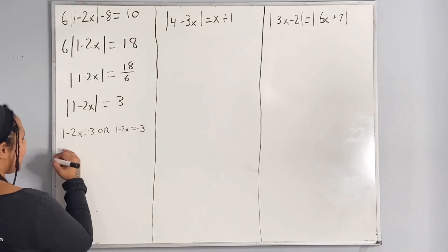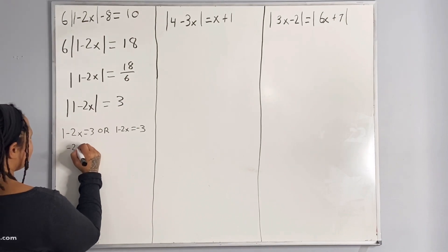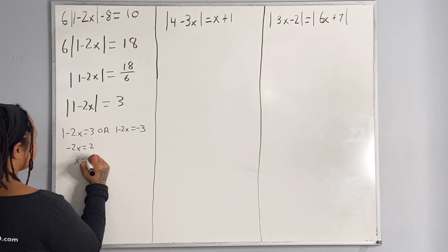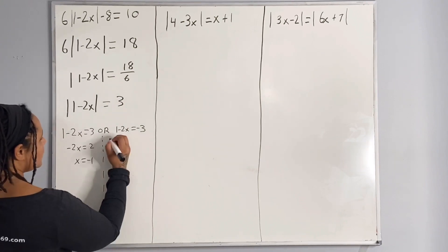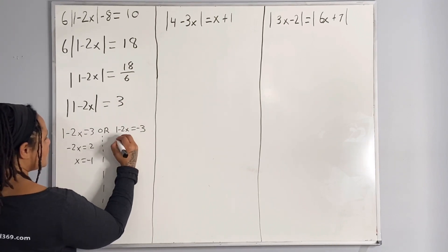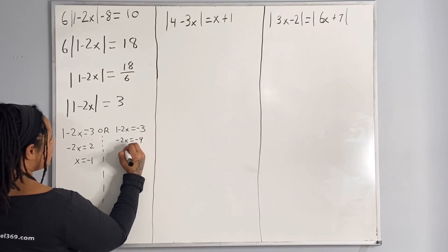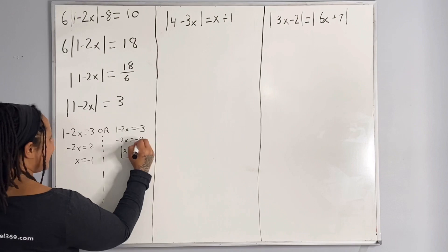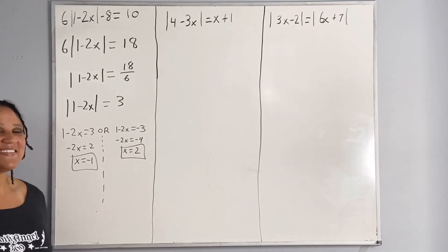Subtracting 1 from both sides, we get negative 2x is equal to 2, which means x is equal to negative 1. Over here, we subtract 1 from both sides again, so we get negative 2x is equal to negative 4, which means x is equal to 2. And that is how you do the first problem.